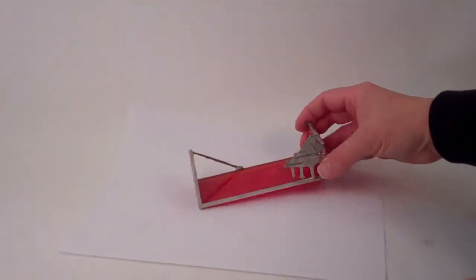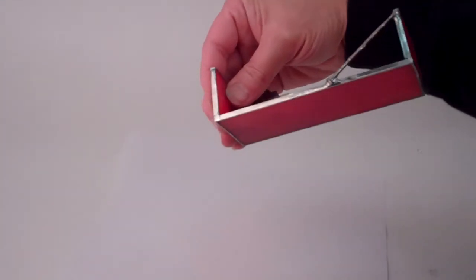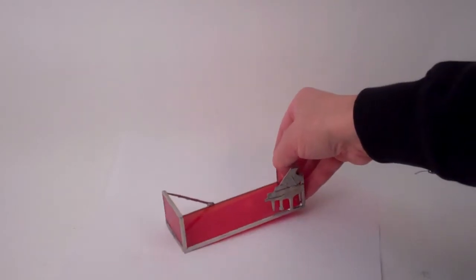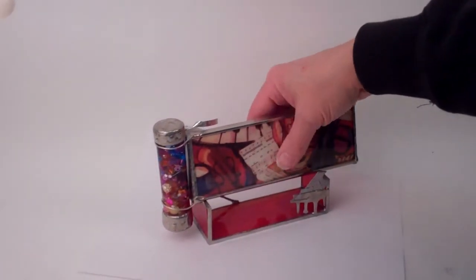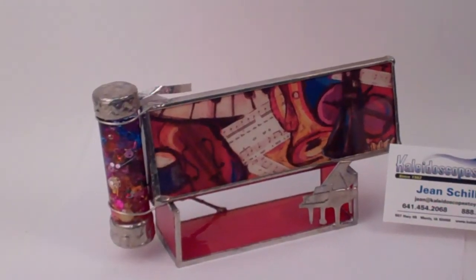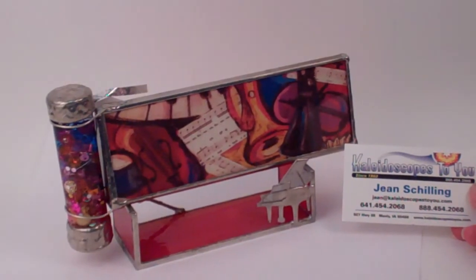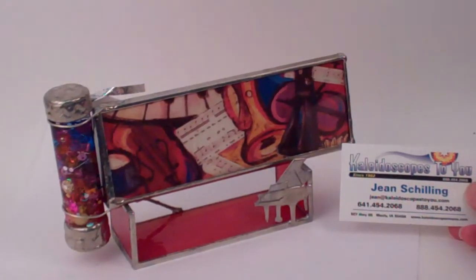The stand that she creates features a piano on one side and a clarinet on the other to really feature the bright music of a Klezmer in this lovely handcrafted glass kaleidoscope created by Joanne Flateau Jacobs, currently available at Kaleidoscopestoyou.com.